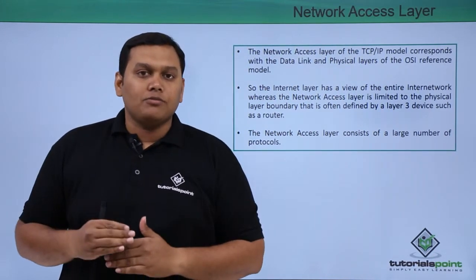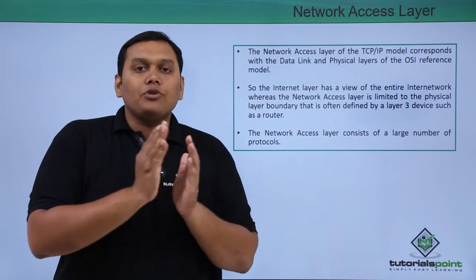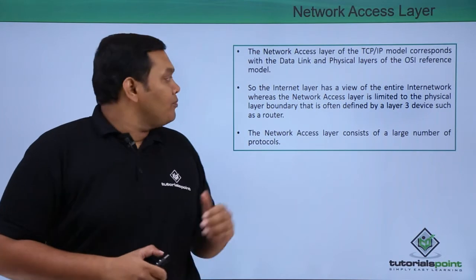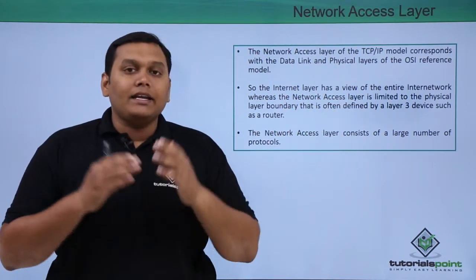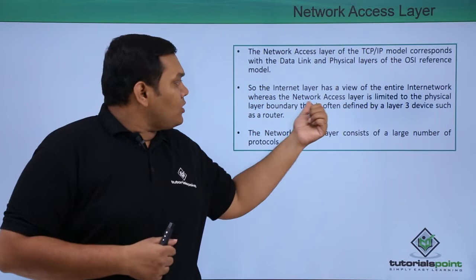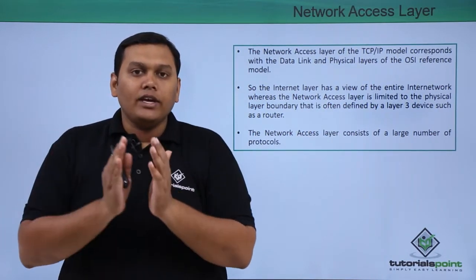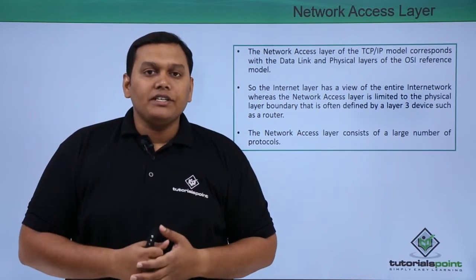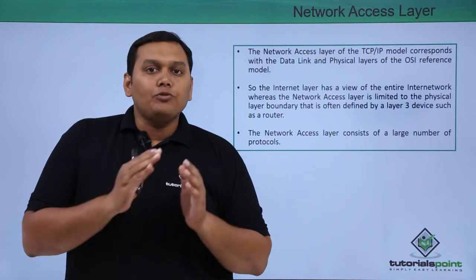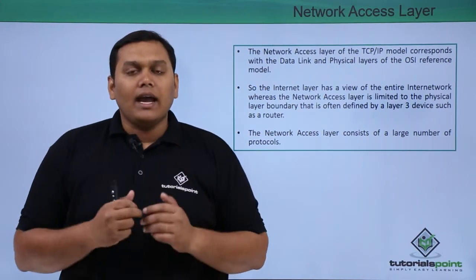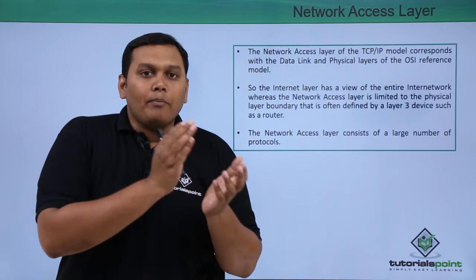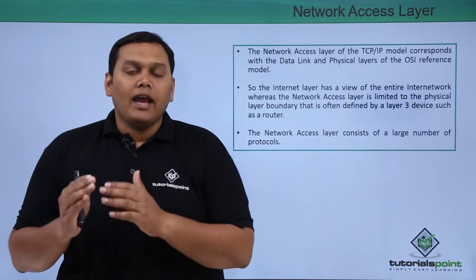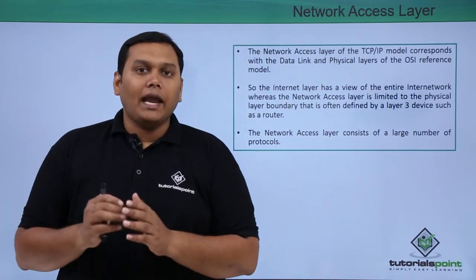Comparing with the OSI reference model, the network access layer corresponds to both the data link layer and the physical layer. The internet layer has a view of the entire inter-network, whereas the network access layer is limited to the physical layer, where two main functions are possible: first, encapsulating the IP datagram into frames sent through the network, and second, mapping the physical address to the hardware address so that data is sent into the frames.